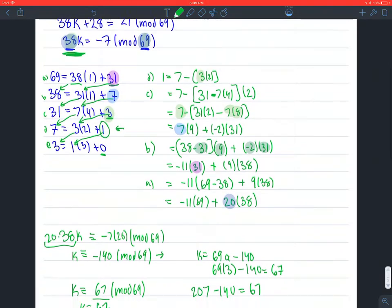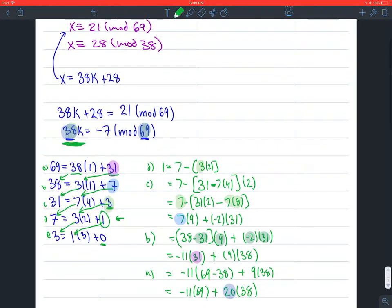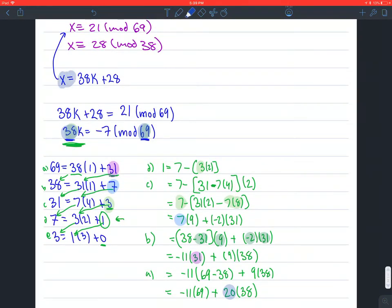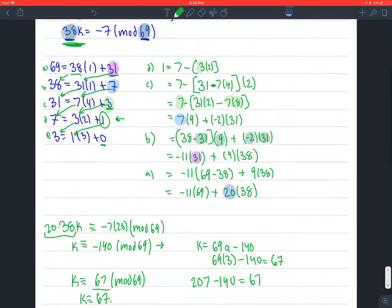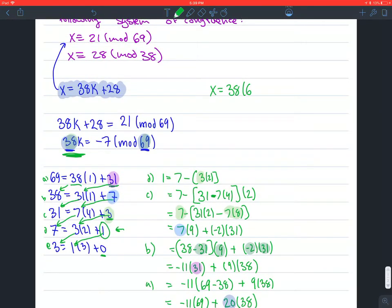Okay, so now that we have K, we look back, and we see our equation all the way up here. This X equals 38K plus 28. So we're going to plug it back in. So X equals 38, and we said it was 67 times 67 plus 28. So this is going to give us a really big number, plus 28, 2,574. And that is the answer to this question.